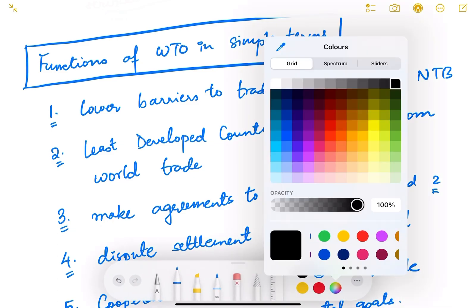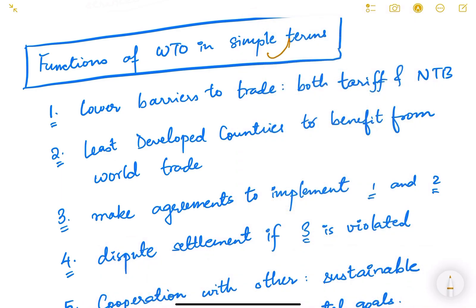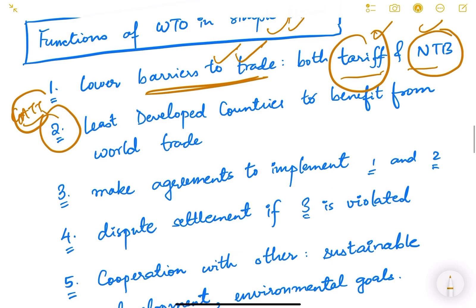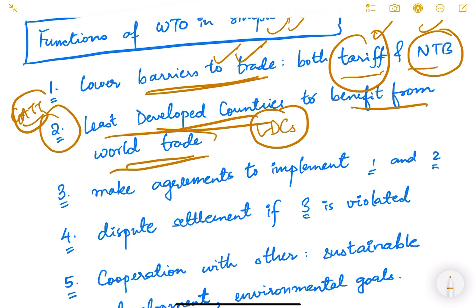The functions of WTO in simple terms: first, to reduce barriers to trade — both tariff and non-tariff barriers — without discrimination. This was the basic function inherited from GATT. Second, least developed countries (LDCs) — extremely poor countries — must benefit from world trade. Since they lack sufficient infrastructure and comparative advantage, they should be allowed to give subsidies to domestic industries and have certain exemptions so they can participate in world trade.